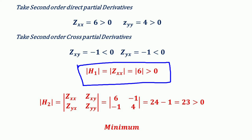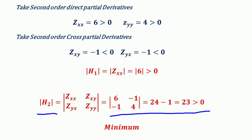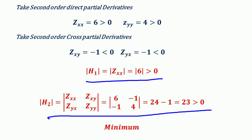Taking the principal minors: the first principal minor h1 = z_xx = 6, which is greater than 0. The second principal minor h2, computed as the determinant of the Hessian matrix, equals 23, which is also greater than 0. With both h1 > 0 and h2 > 0, the second order condition for minimum is satisfied — the function z is minimized at the critical values x = 1 and y = 2.